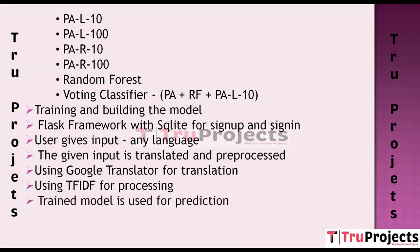Once the user's input is preprocessed, it is fed into the trained machine learning models. These models, which have learned from the training data, predict the category or type of the input text. The model's predictions are based on patterns and knowledge gained during training.